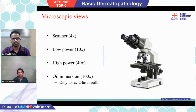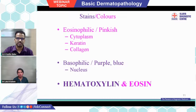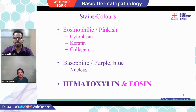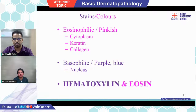When you keep the slide under the microscope, you mainly see two colors: pink (eosinophilic) because of eosin, and blue (basophilic) because of hematoxylin. Please remember that blue color is taken up by the nucleus — whenever you see blue, think of nucleus. Pink color is taken up by the cell cytoplasm, so in a cell you will see pink cytoplasm and blue nucleus. In addition, pink is also taken up by keratin as well as collagen.